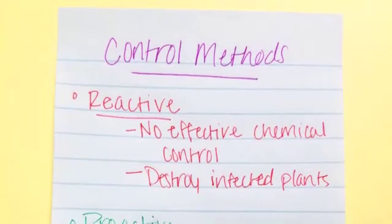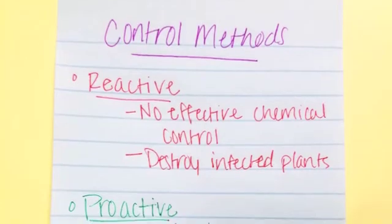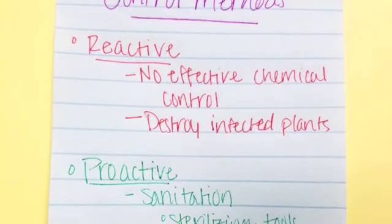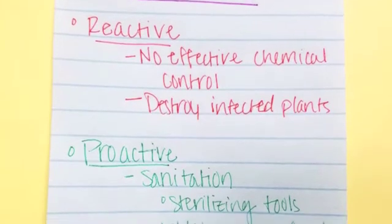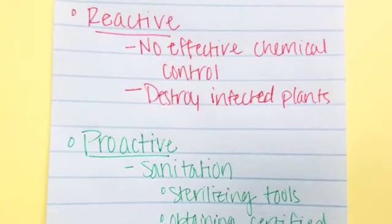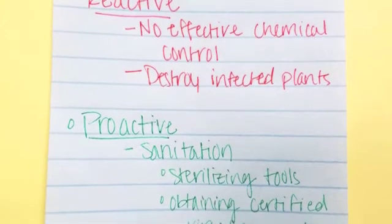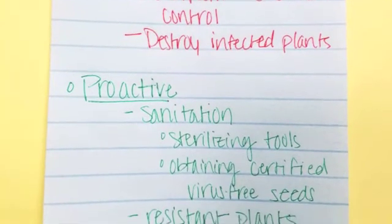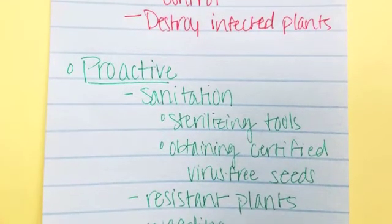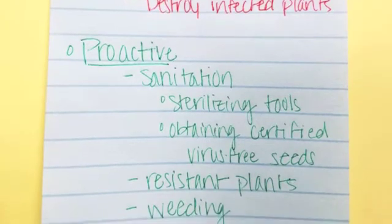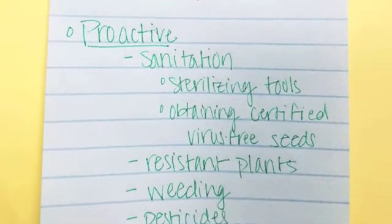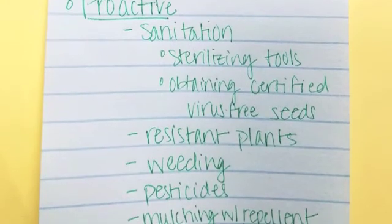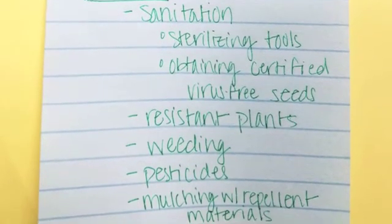There is no effective treatment for the pody virus at this time. However, you can be proactive by sanitizing your tools with either Lysol or rubbing alcohol, obtaining certified virus-free seeds, planting plants that have a resistance to the pody virus group, weeding in and around your growing area, applying pesticides that target aphids, and mulching with repellent materials which aphids do not like, and/or a combination of all of these best practices.